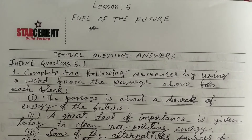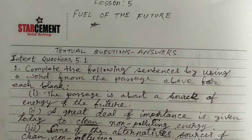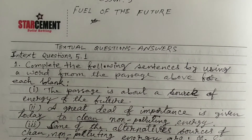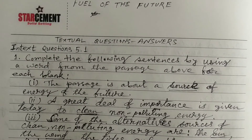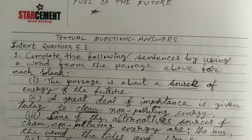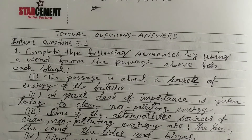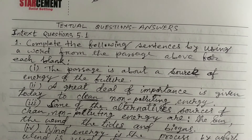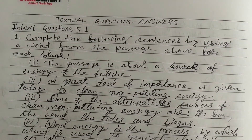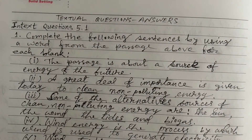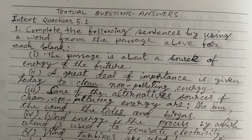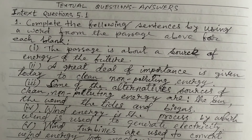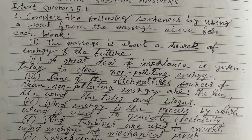Complete the following sentences by using a word from the passage above for each blank. 1. The passage is about a source of energy of the future. 2. A great deal of importance is given today to clean, non-polluting energy. 3. Some of the alternative sources of clean, non-polluting energy are the sun, the wind, the tides, and biogas.